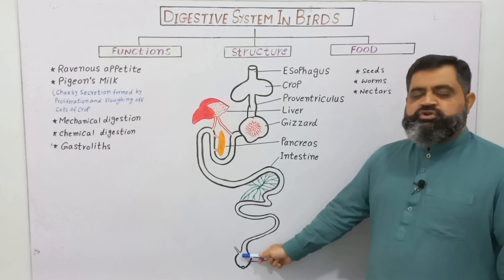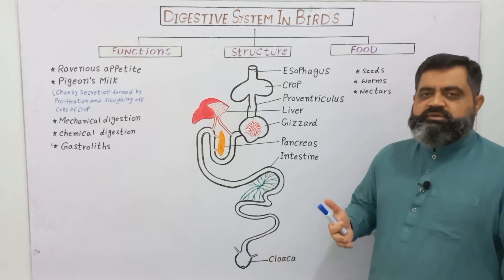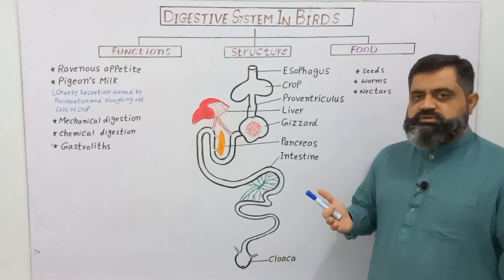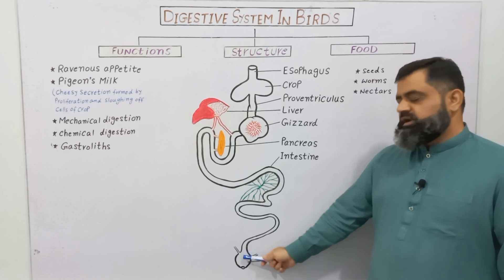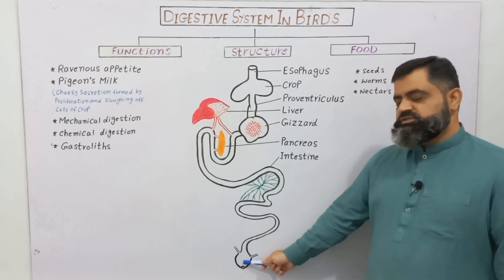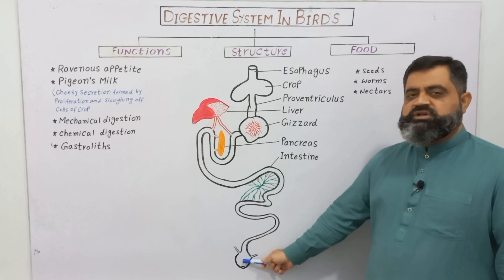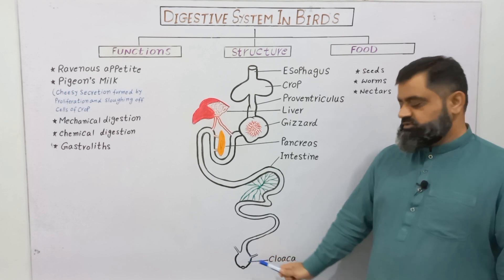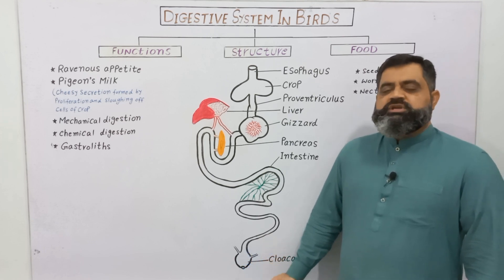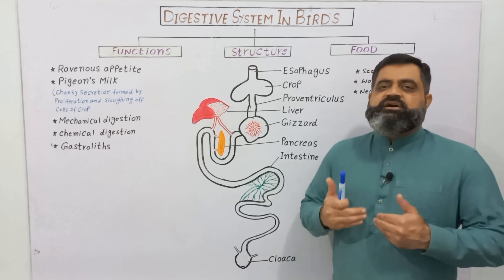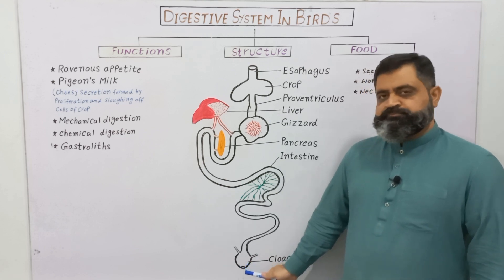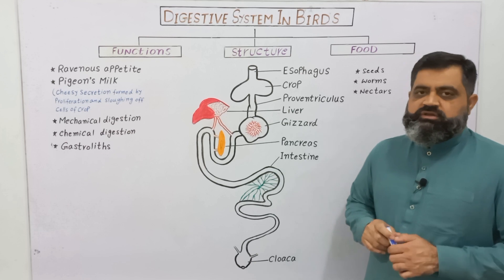In the large intestine, water, minerals, and remaining food are reabsorbed. Then the undigested material reaches the last part of the digestive system, which is known as the cloaca, from where it is excreted out in the form of feces through the cloacal aperture.